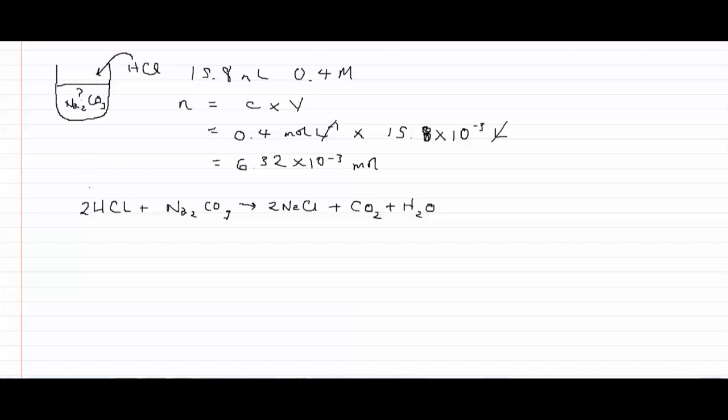Now if we look at this equation, the stoichiometry of the equation, we can see that for every mole of sodium carbonate that reacts, 2 moles of hydrogen chloride have reacted. So the stoichiometry of the reaction is 2 to 1.